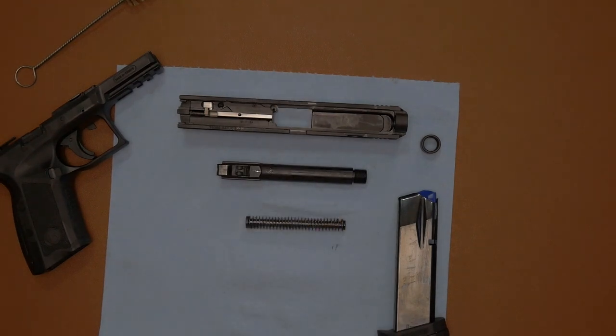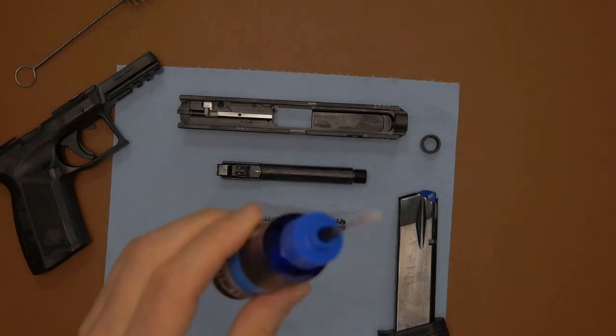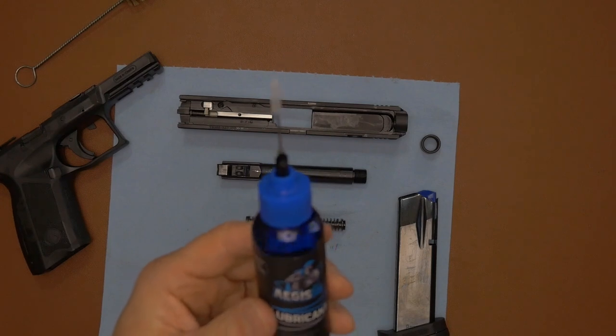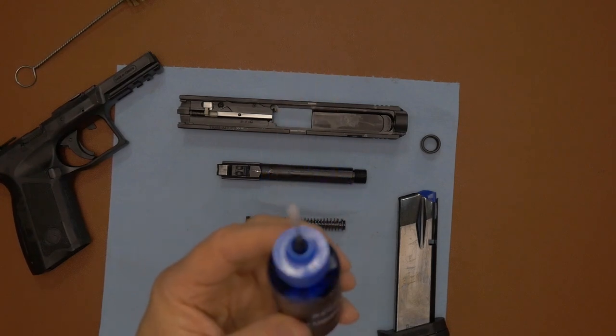And they have a lubricant. They just use a two-step process. They do not use CLP. And then they have a lubricant, and this lubricant is a nanotechnology-type lubricant. So it will be absorbed into the firearm.